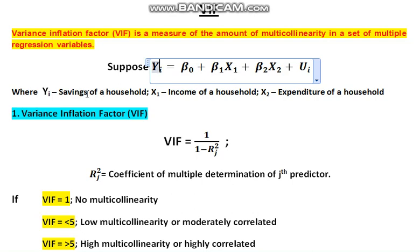Say savings is a function of the income of the household and expenditure of the household. Now these two variables, the income and the expenditure of the households, may be correlated to each other. Then if it is correlated...